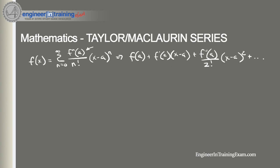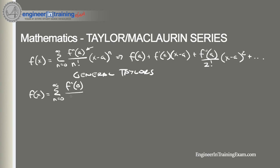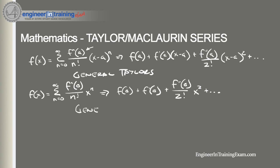That's the general formula of a Taylor series about x equals a. Now, if we have a Taylor series about x equals zero, it's more commonly referred to as the Maclaurin series. That general formula is f(x) equals the sum from n=0 to infinity of f^n(0) divided by n factorial times x raised to the n. The general terms for the Maclaurin series are f(0) plus f'(0) plus f''(0) divided by 2 factorial times x squared, and so on.